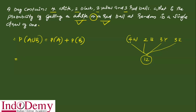Probability of getting white is 4 by 12, plus the probability of getting red is 3 by 12. So adding 4 by 12 plus 3 by 12.